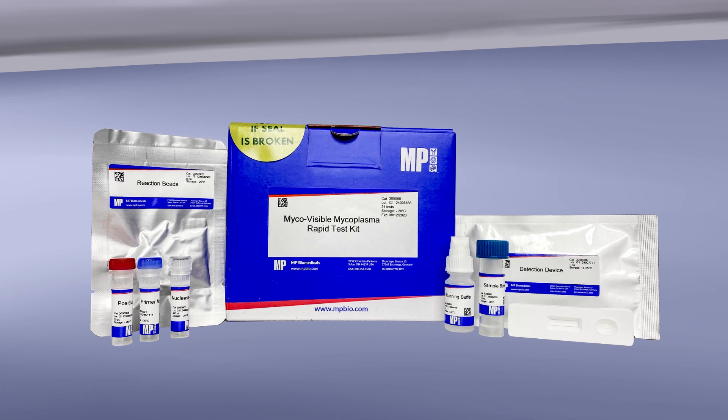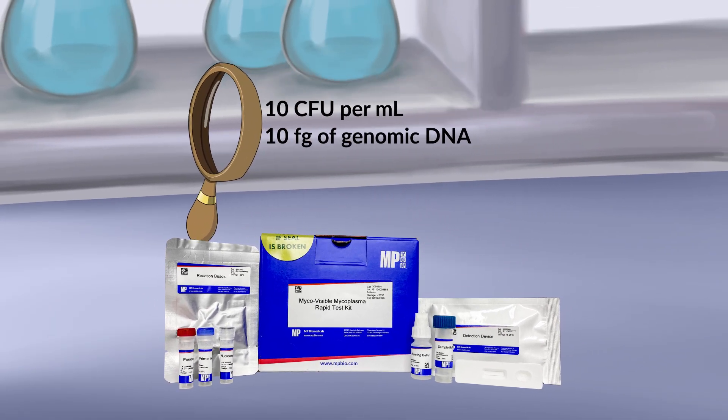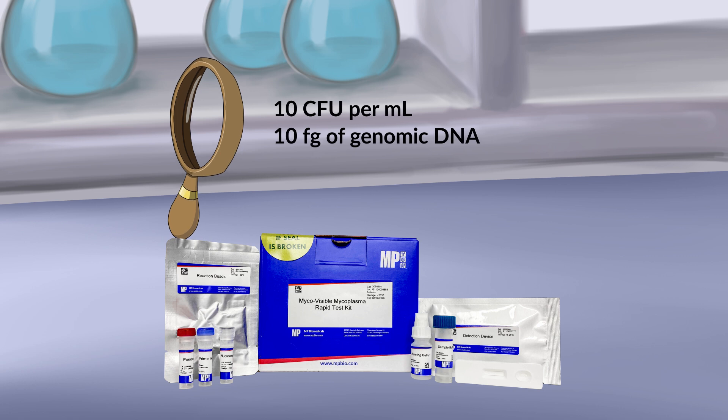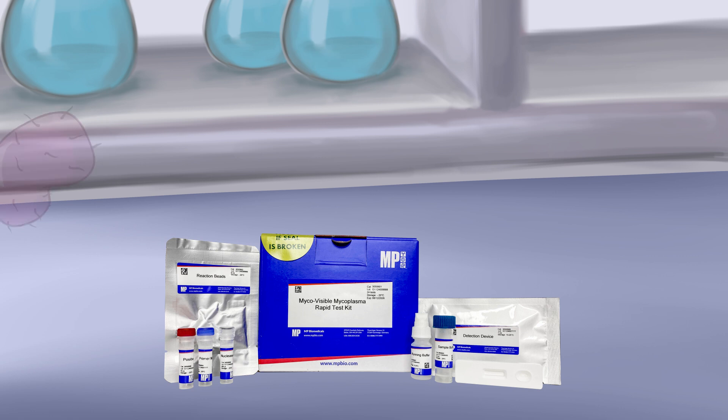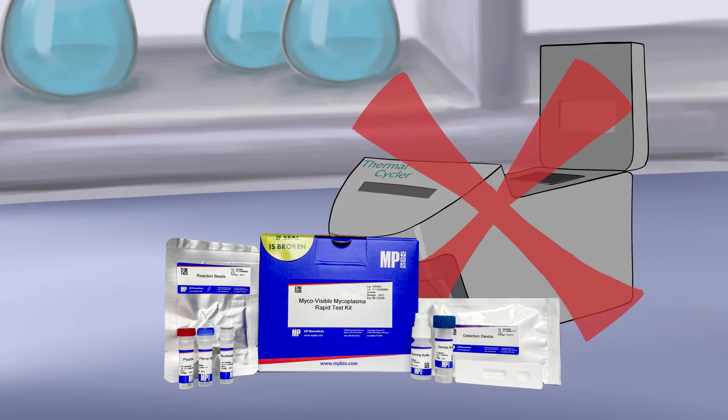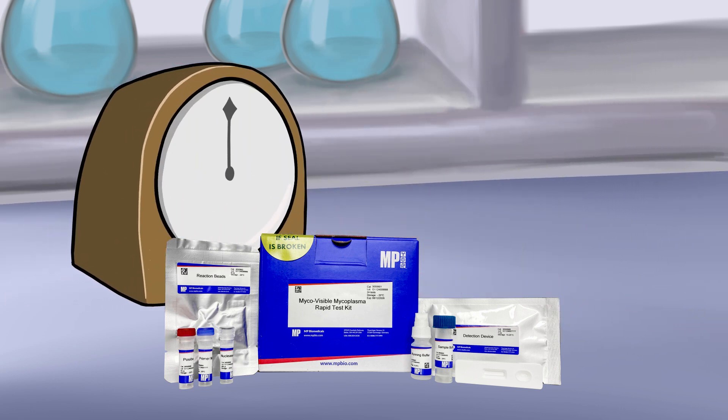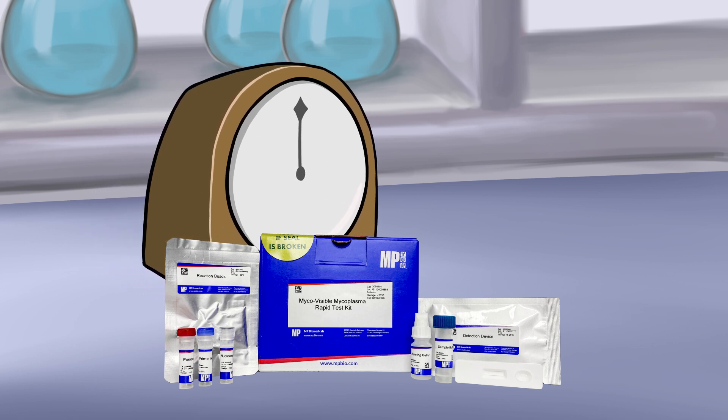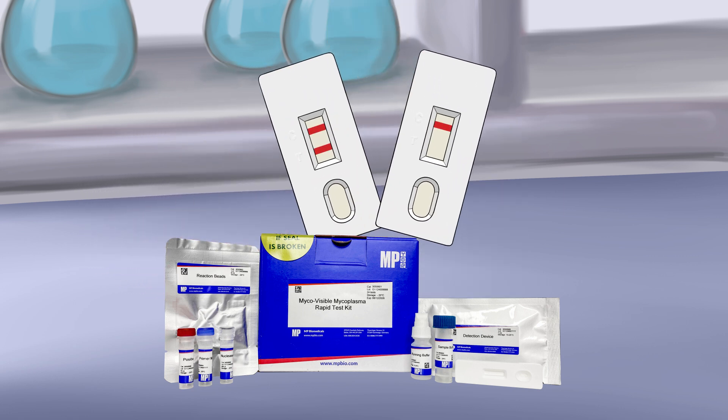The kit includes advanced features such as detection of mycoplasma with sensitivity as low as 10 CFU per milliliter or 10 femtograms of genomic DNA, effectiveness against a wide range of mycoplasma species, simplicity of performance without the need for a thermal cycler or special equipment, delivery of accurate results in under an hour, and clear results visualized instantly through colored lines on the test strip.